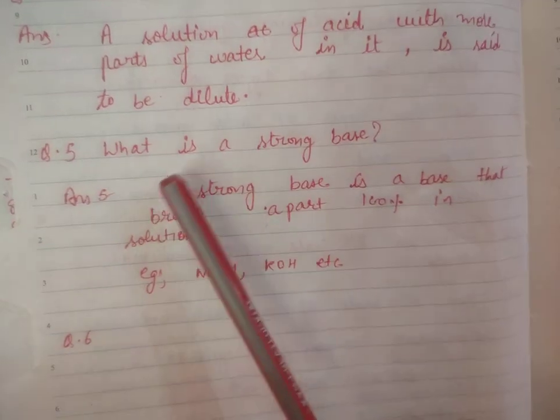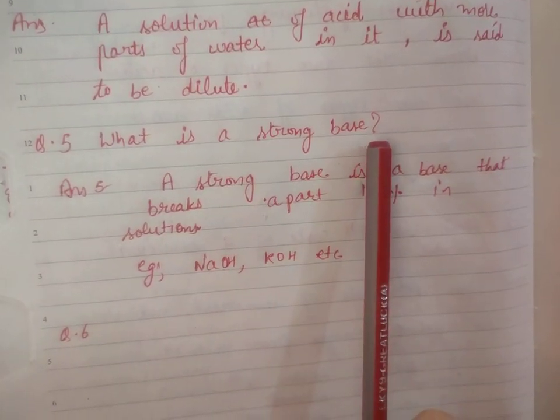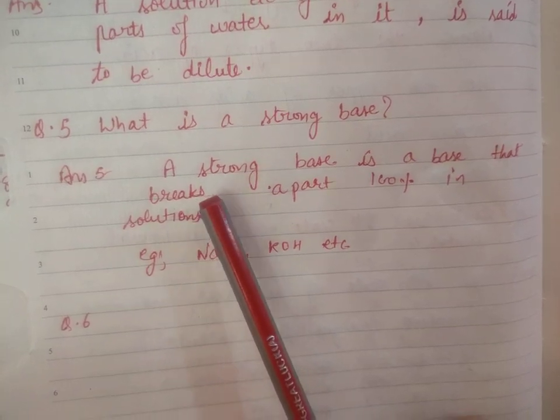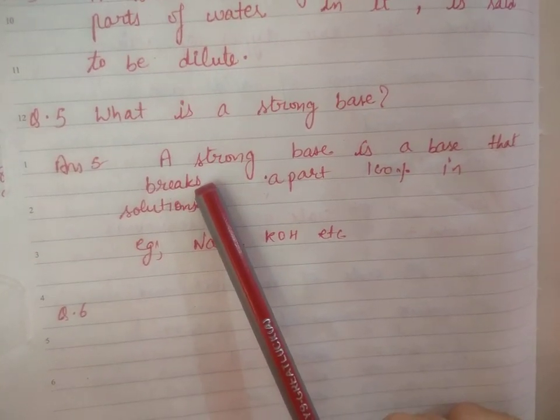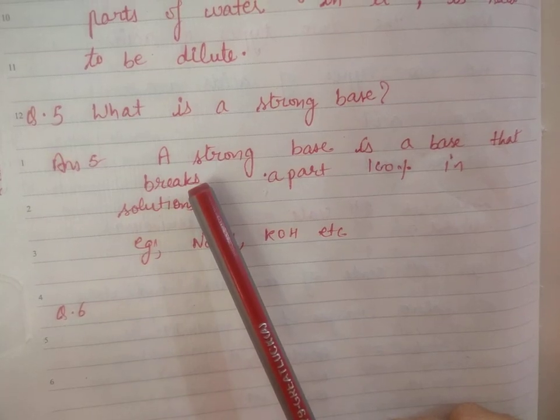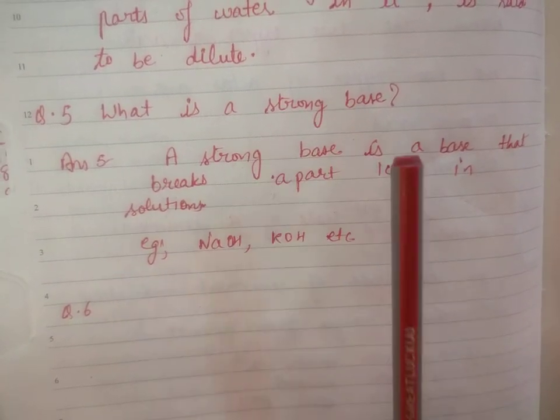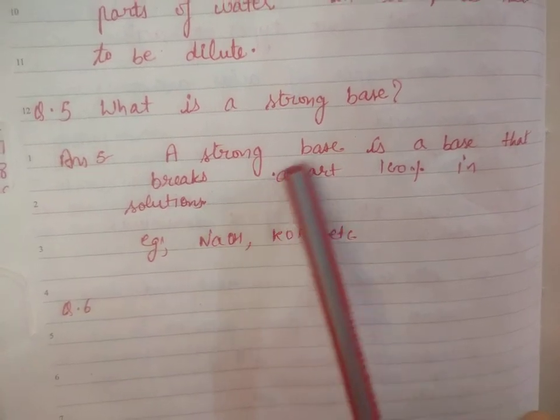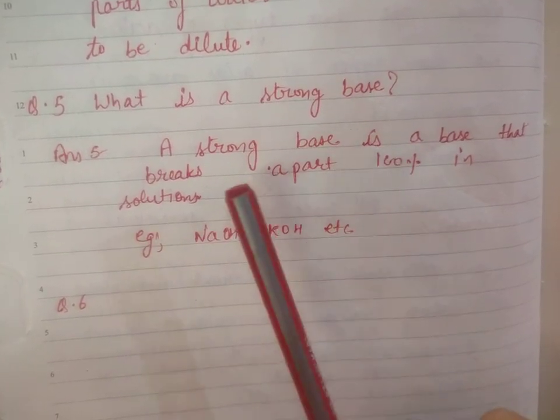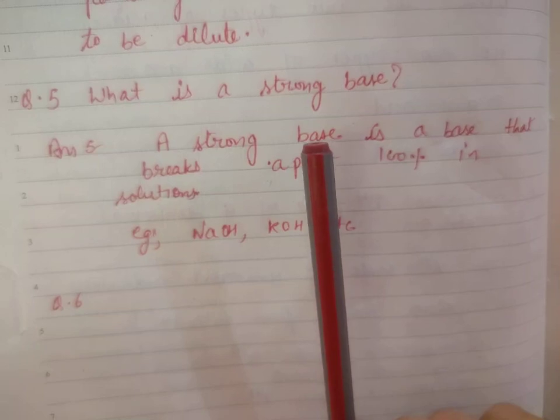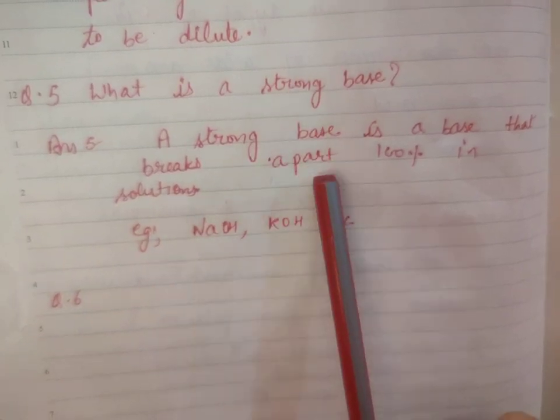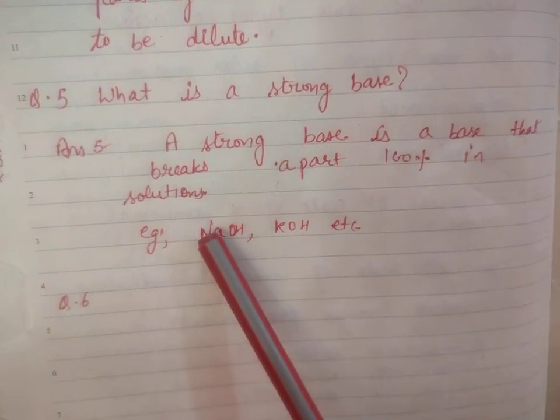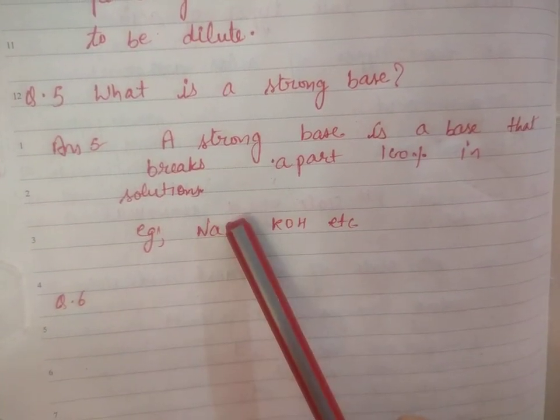Then fifth question: What is a strong base? A strong base is one that, as soon as you make its solution, breaks down 100%. A strong base is a base that breaks apart 100% in solution, that ionizes completely. That is called a strong base, like NaOH or KOH.